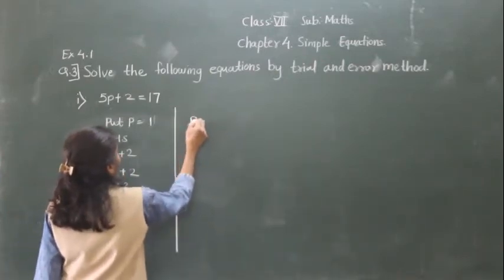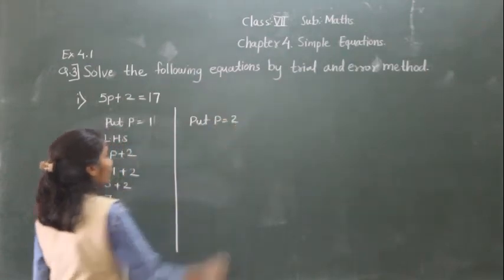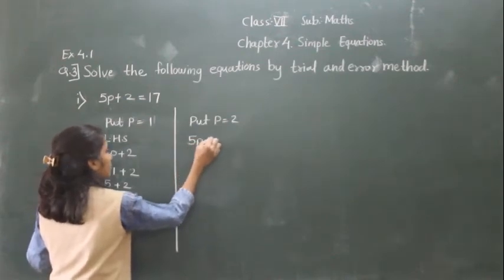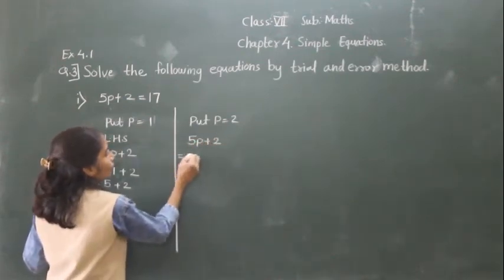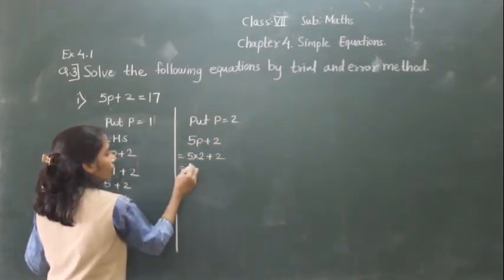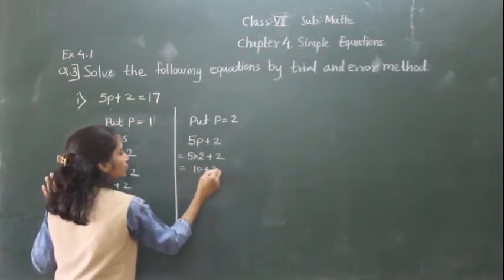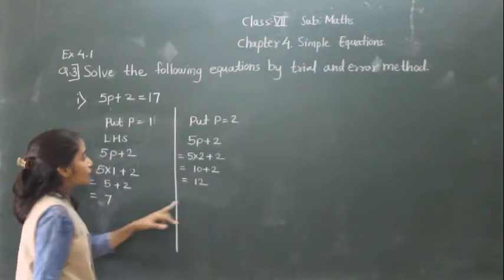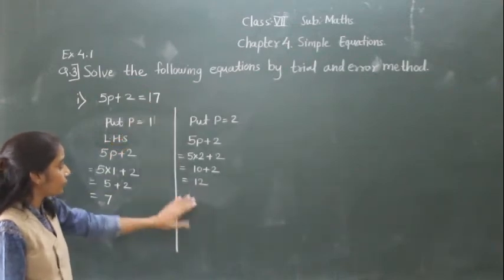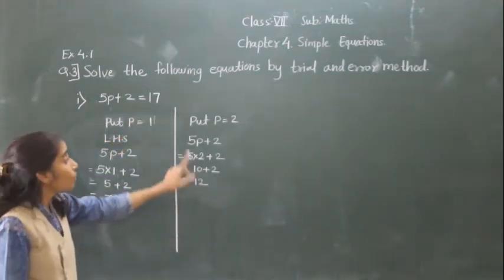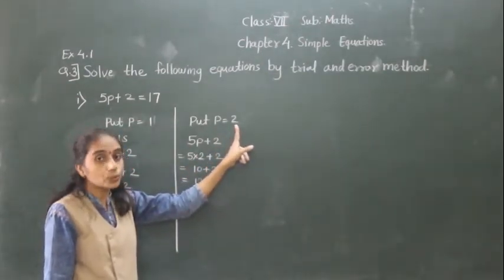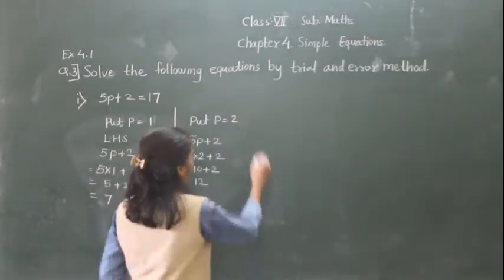Now put P equal to 2 in the given equation. 5P plus 2 becomes 5 into 2 plus 2, which is 10 plus 2 equals 12. We want RHS to be 7, but left hand side gives 12. So P equal to 2 is not the solution of the given equation.